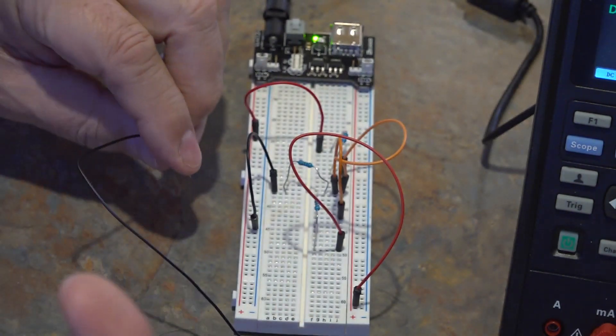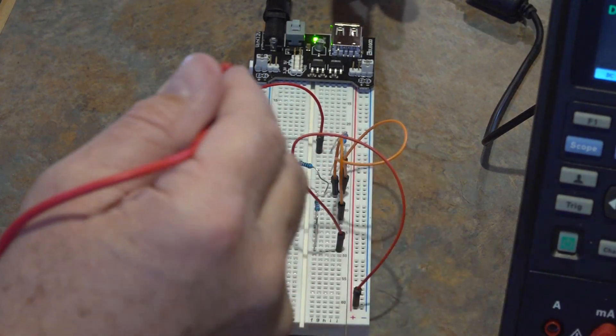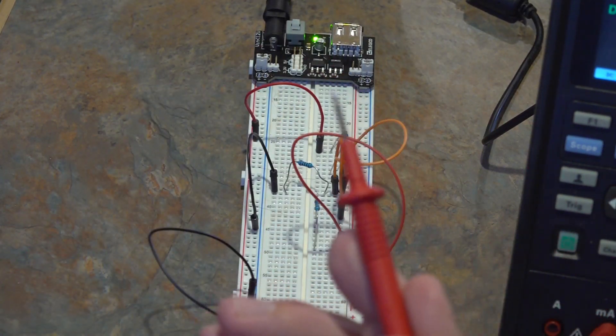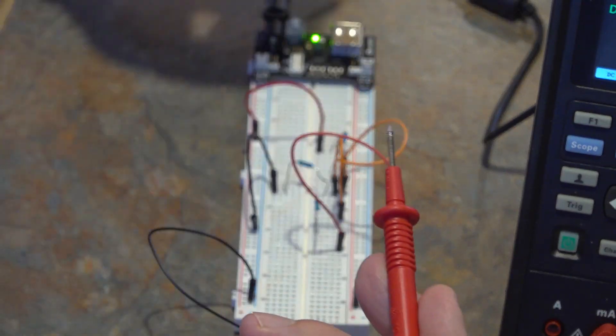So I can now take the other end of this wire and I can plug it into the breadboard and this frees up one hand. So there I've plugged it into the ground side and now I can use the positive probe to check the other voltages that are on the breadboard.